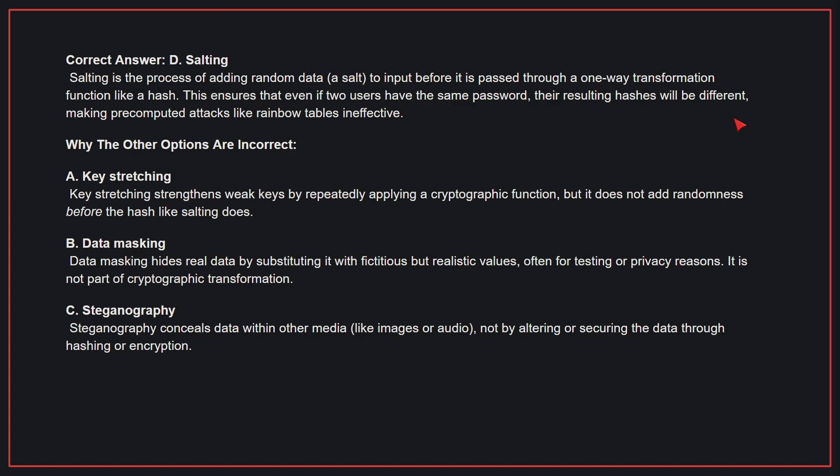Why the other options are incorrect? A: Key stretching. Key stretching strengthens weak keys by repeatedly applying a cryptographic function, but it does not add randomness before the hash like salting does. B: Data masking. Data masking hides real data by substituting it with fictitious but realistic values, often for testing or privacy purposes. It is not part of cryptographic transformation.